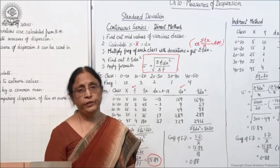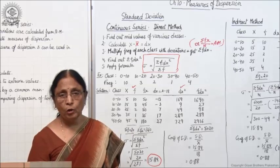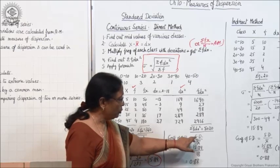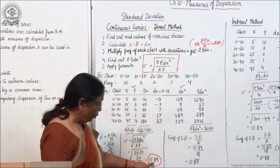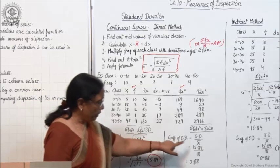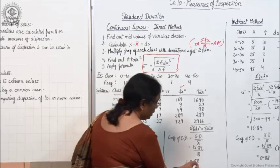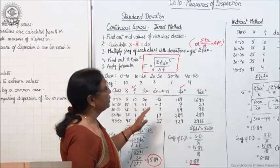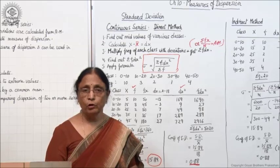After getting the standard deviation, you are going to calculate the coefficient of standard deviation. The coefficient of standard deviation equals standard deviation upon x̄. Standard deviation is 15.84 and x̄ is 18, so divide 15.84 by 18 — this is your coefficient of standard deviation. This is the direct method of calculating standard deviation in the case of continuous series.